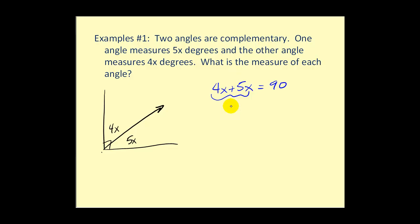So when we solve this equation, we have nine x equals ninety. Dividing both sides by nine, we can see x is equal to ten. So if this angle is four x, or four times ten, here we have forty degrees. And here we'd have five times ten, or fifty degrees.